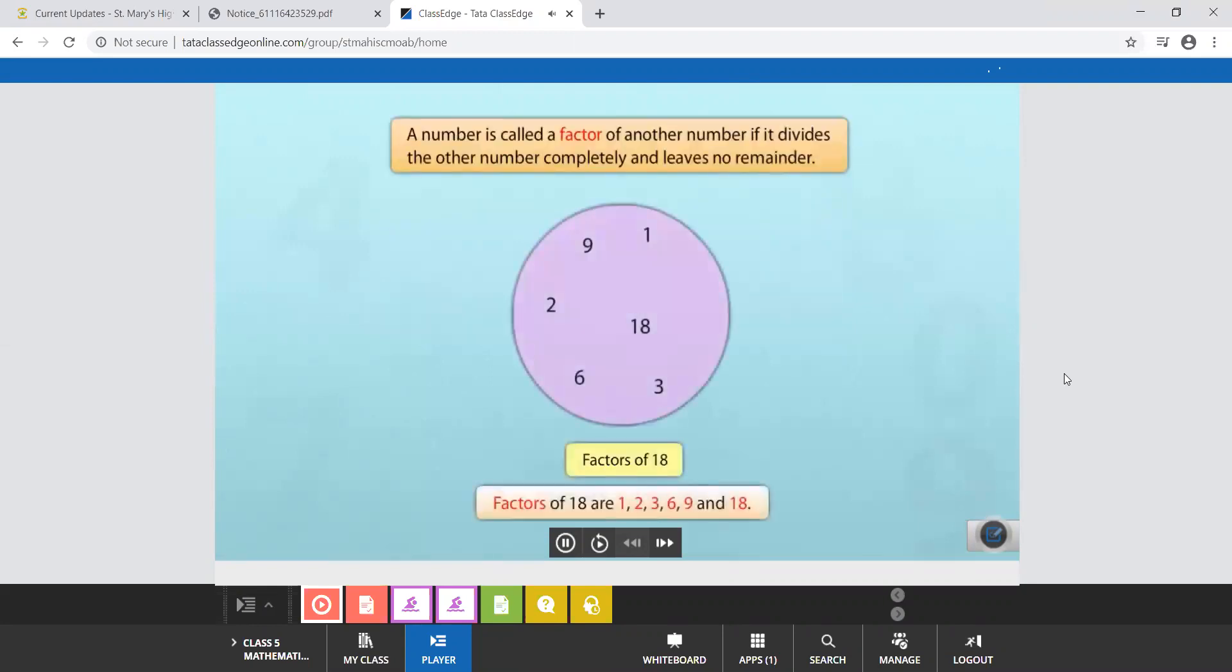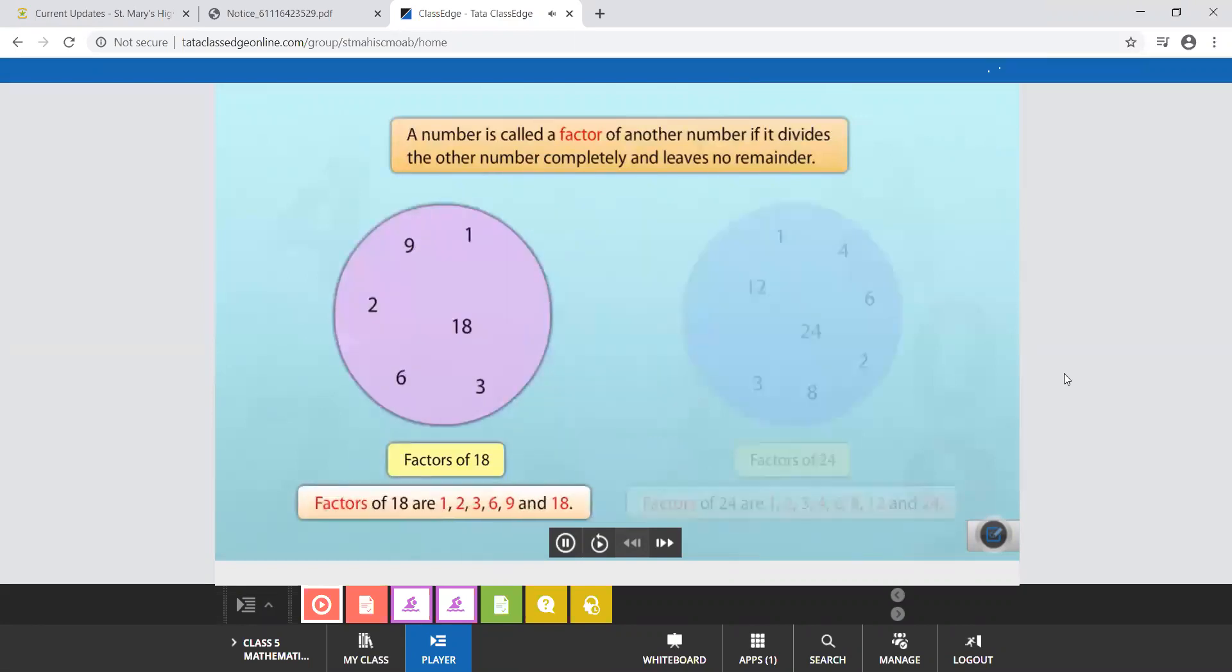So the factors of 18 are 1, 2, 3, 6, 9 and 18. In the same way the factors of 24 are 1, 2, 3, 4, 6, 8, 12 and 24.